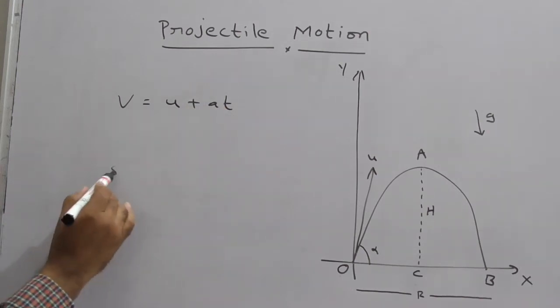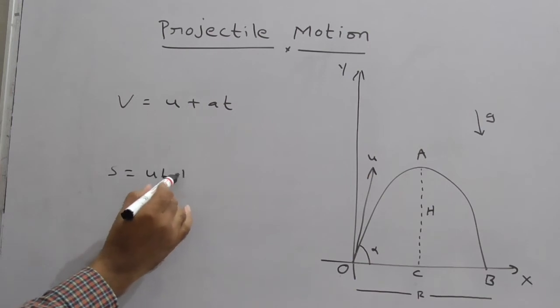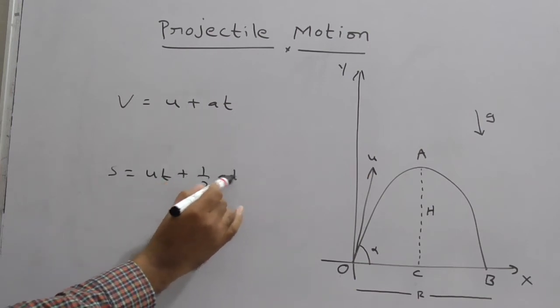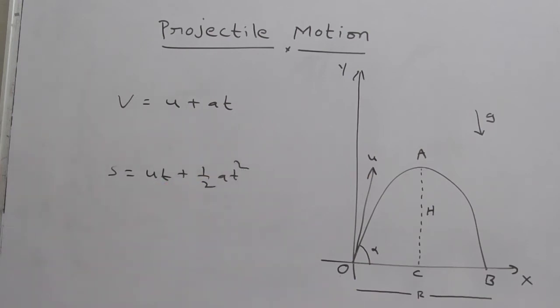The next formula is s = ut + ½at². And the third one is v² = u² + 2as. We have to use these three formulas to derive the standard formulas of projectile motion.